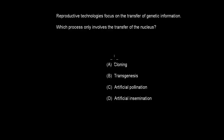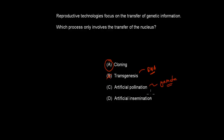Welcome back. The answer is cloning. In transgenesis, we only transfer parts of the DNA, not the whole nucleus, so that's wrong. Artificial pollination involves transferring the whole gamete into a different flower, not just the nucleus. The same applies to artificial insemination — that refers to semen in animals, but again it's the whole gamete, not just the nucleus. So A is correct.